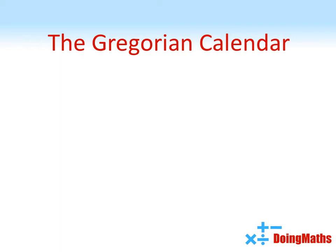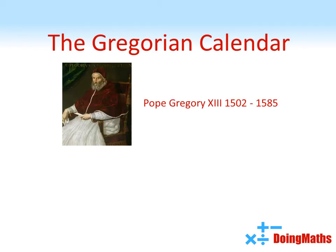Having a calendar out of sync with the actual seasons was a problem for the Christian Church, as it created issues with the timings of many of their celebrations, such as Easter. To solve this, Pope Gregory XIII commissioned a new calendar, the Gregorian calendar. In 1582, the calendar was reset by skipping 10 days, and an extra rule was implemented.